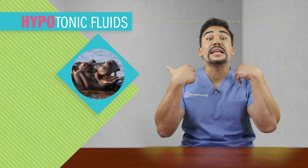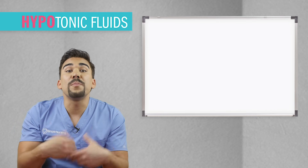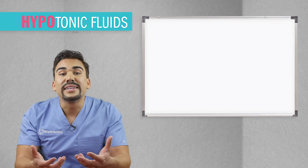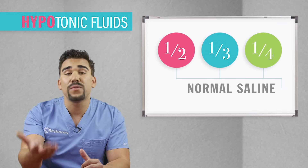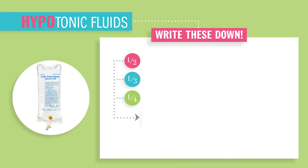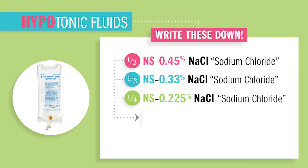Now hippos are massive and they eat a lot because they're very hungry, hungry hippos. And this is a simple way to remember hypotonic solutions — they're usually half, one third, or even one fourth of normal saline. Write this down, this is a list of hypotonic fluids: Half NS or 0.45% NaCl sodium chloride, one fourth NS or 0.20% sodium chloride, one third NS or 0.33% sodium chloride, and 2.5% dextrose in water, as well as D5W.